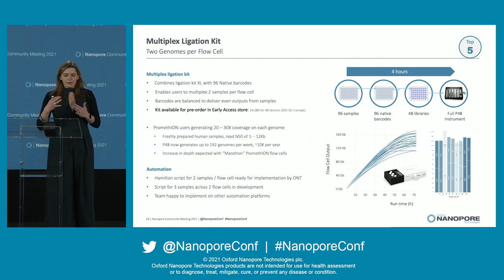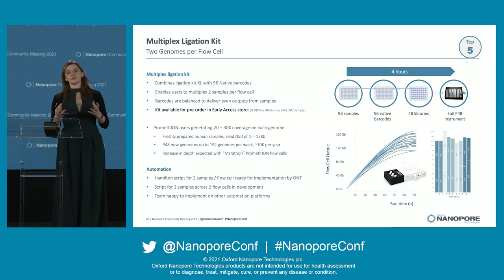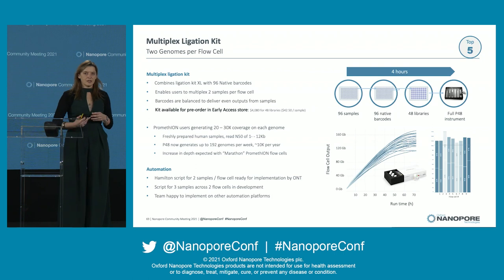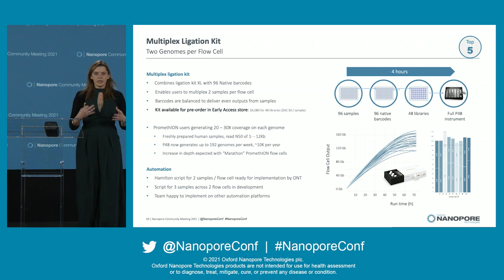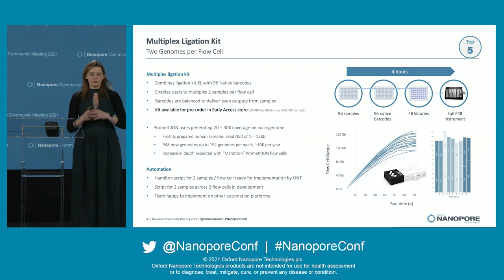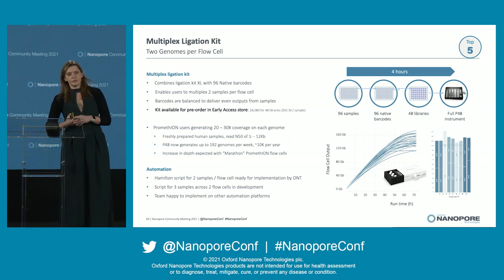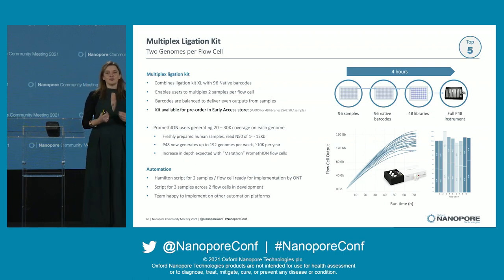The multiplex kit is designed around production sequencing houses that have asked to be able to sequence multiple genomes on a single flow cell — on a Promethium flow cell. We have data from early validations done at customer sites where people are getting 120 to 150 gigabases off a Promethium flow cell with two genomes, beautifully balanced. The target is to push that up so you get 30x coverage per genome in a flow cell. Hamilton scripts are available — please do come and talk to us if you want to enable two genomes per flow cell and if you want to talk about production sequencing.